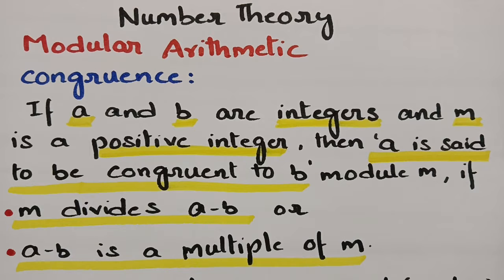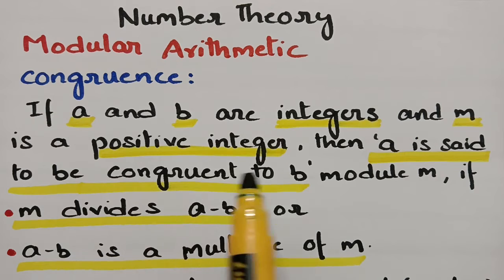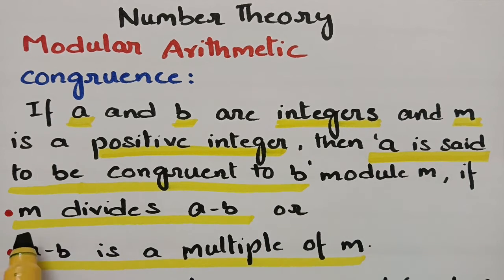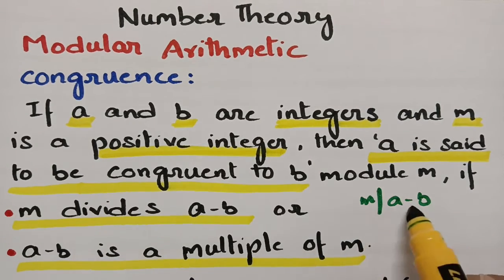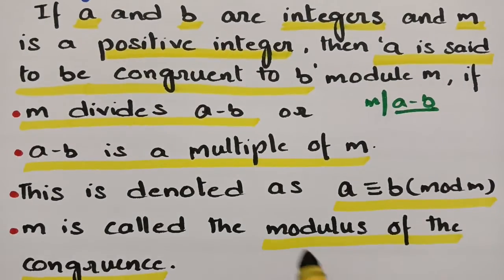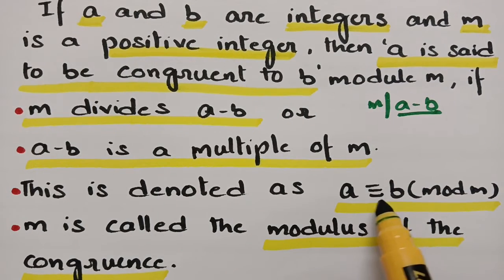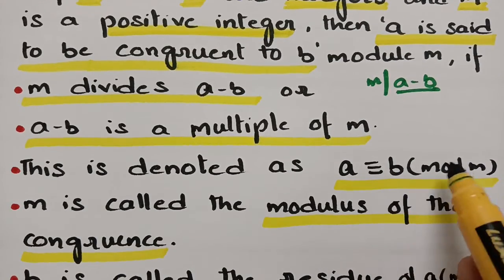In modular arithmetic, the first thing you have to learn about is congruence. When we say that A is congruent to B: if A and B are integers and M is a positive integer, then A is said to be congruent to B modulo M if M divides A minus B, or A minus B is a multiple of M. This is denoted as A ≡ B (mod M). Here M is called the modulus of the congruence and B is called the residue of A modulo M.